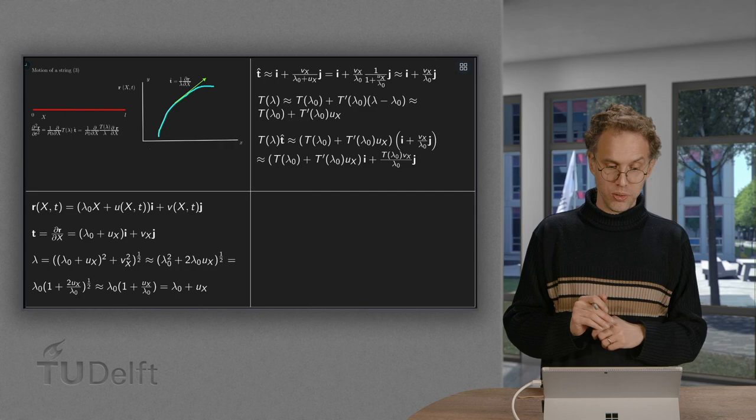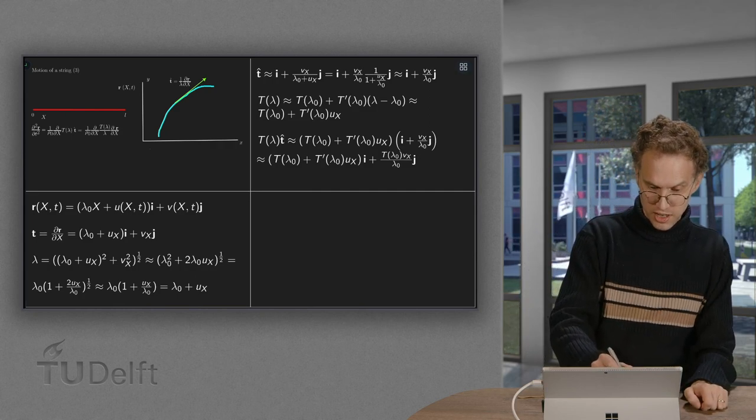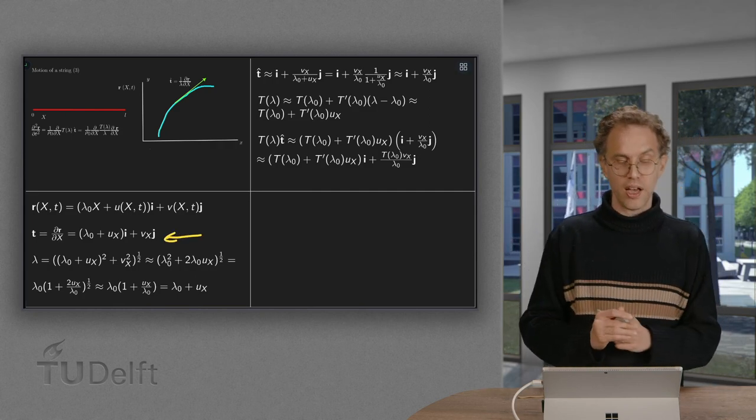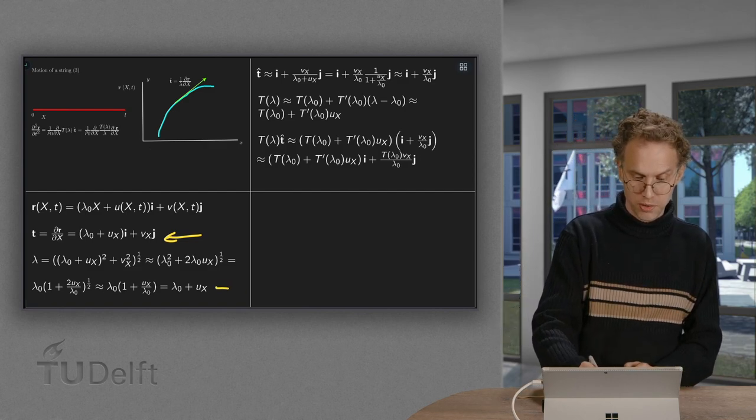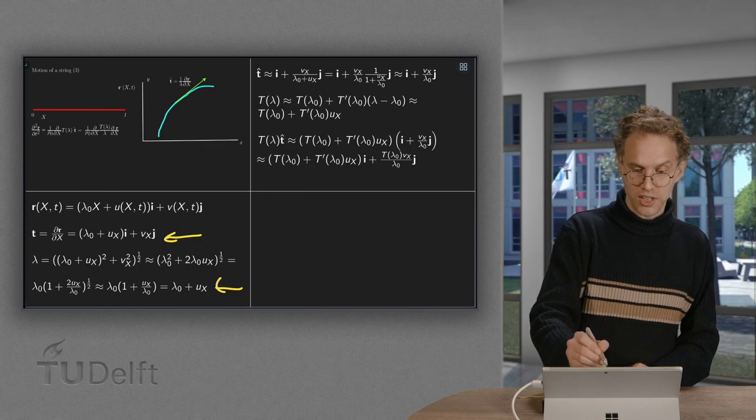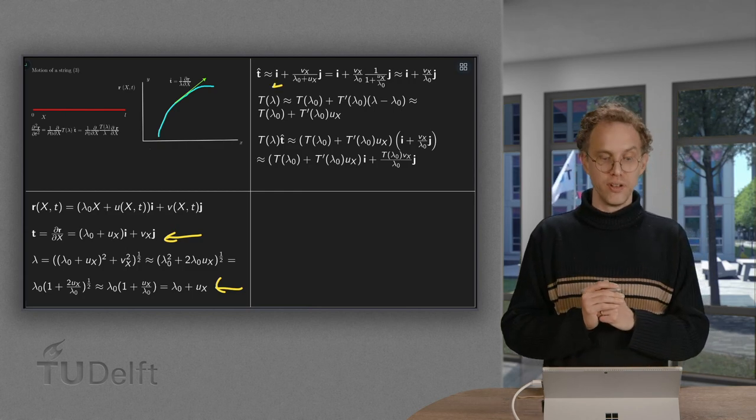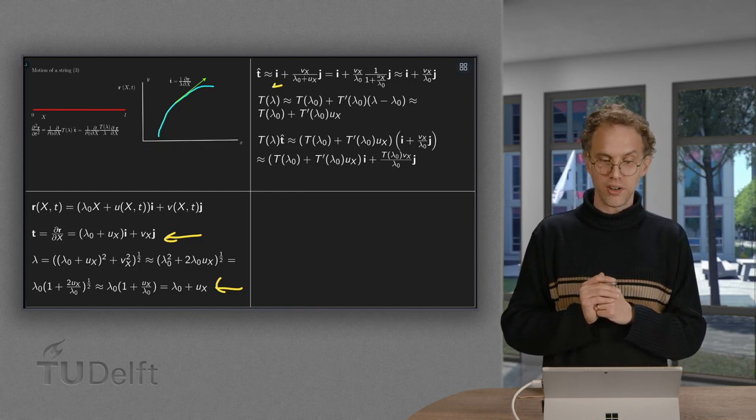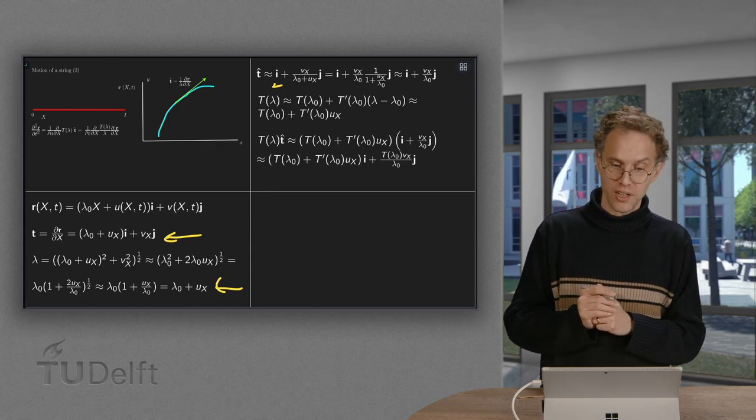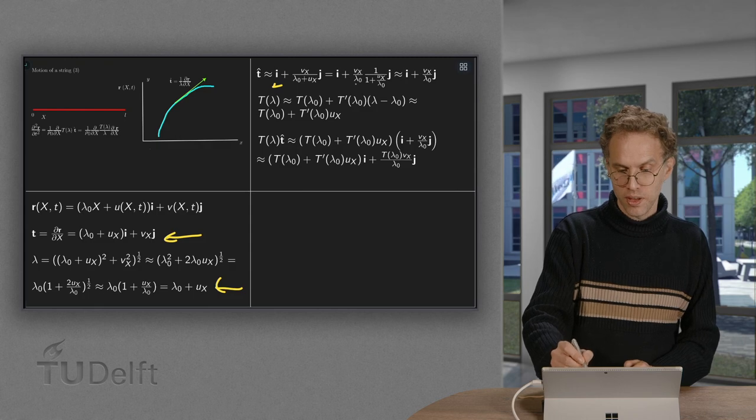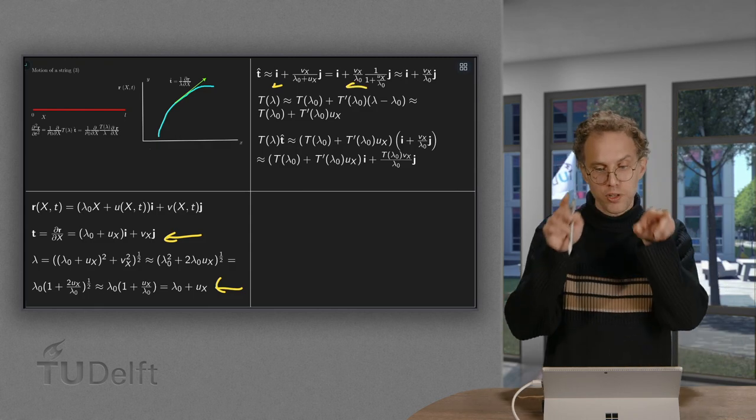Now we can compute the unit tangent. We have the tangent over there. We normalize. We divide by the approximation for lambda by lambda 0 plus ux. So in the i direction you just get a 1. And in the j direction you get vx divided by lambda 0 plus ux. We take out the vx over lambda 0. So we get 1 over 1 plus something small.